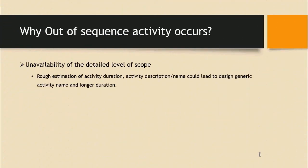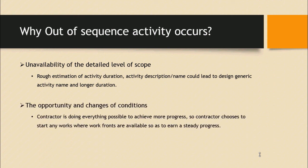Out-of-sequence activities occur due to unavailability of detail in the scope — describing work under one activity with a rough estimated duration. Another reason is that a contractor always tries to achieve maximum progress during the project duration, attacking all available work fronts for steady progress, which might create out-of-sequence activities within the project.